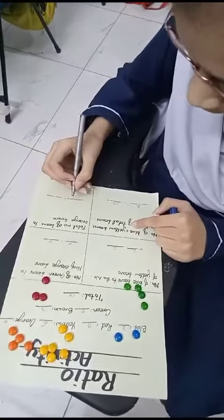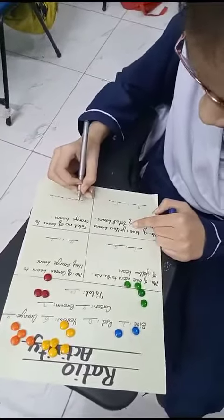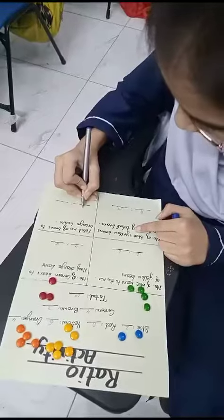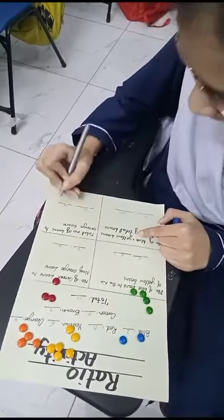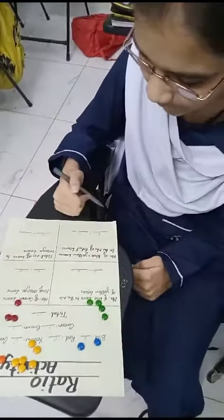Total number of beans to the orange beans. What is the total number? Nineteen? Nineteen. And what is the number of orange beans? Four. So, you got the answer. Nineteen ratio four. Okay.